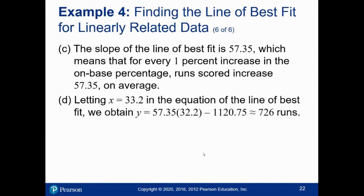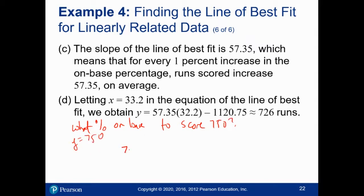The last part said: if a team gets on base 33.2% of the time, how many runs do you expect them to score? That's just a matter of plugging that in and getting out 726 runs. Now what if I had said: what should an on-base percentage be in order for a team to score 750 runs? If I say what percentage on base to score 750, I want Y to equal 750. So I'd say 750 equals 57.35X minus 1120.75, and now I would solve for X.